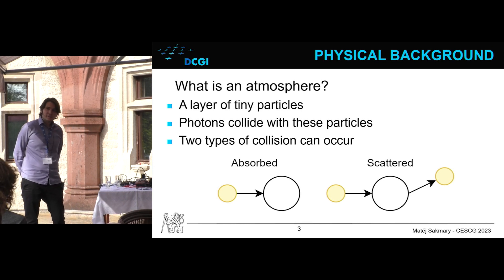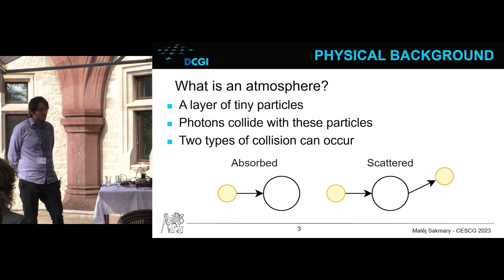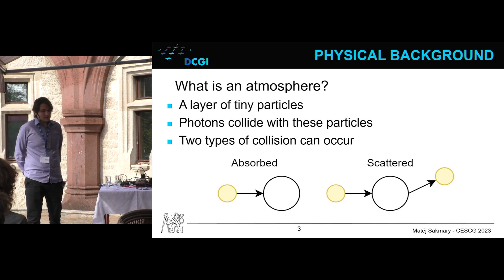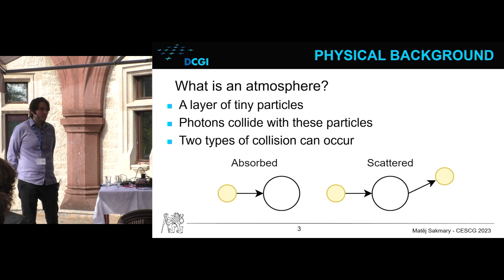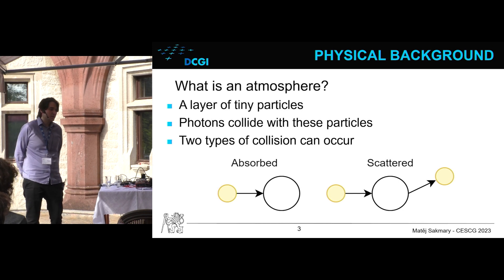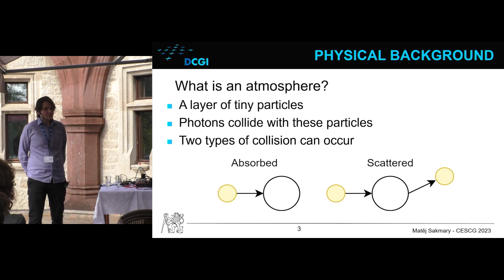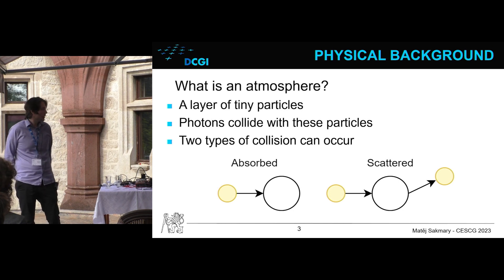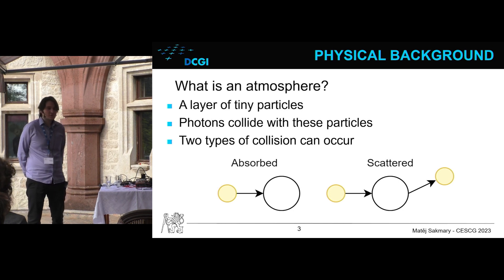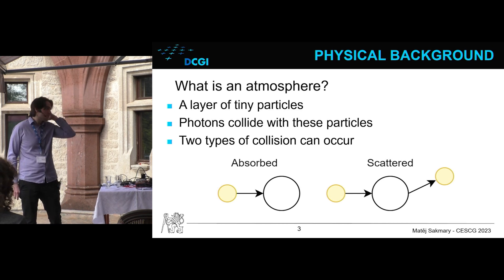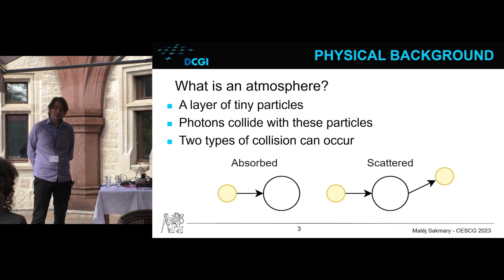Atmosphere is a layer of particles such as water droplets, dust particles, and other molecules. As photons travel through this layer, they collide with said particles. This collision can be of two types. First, the photon might be absorbed by the particle, which means it will no longer continue to travel through the atmosphere. Second, the photon might be scattered, which means it will still continue to travel through the atmosphere, but its path will be altered.